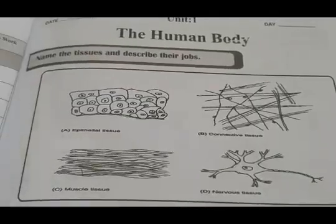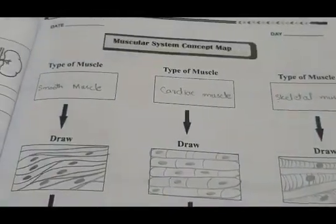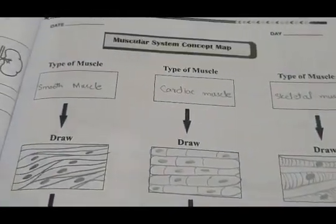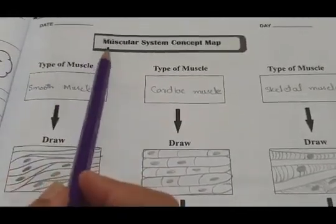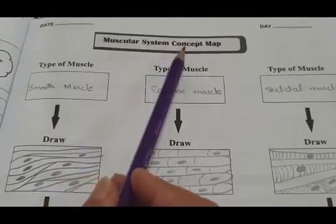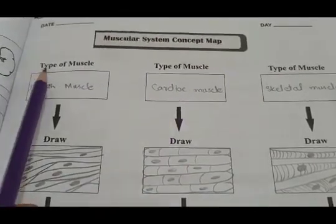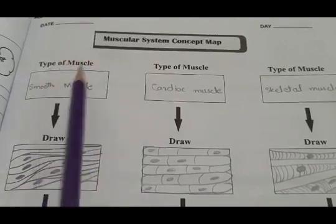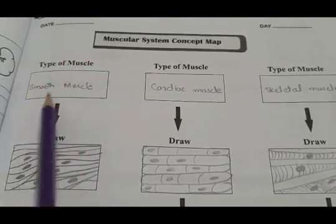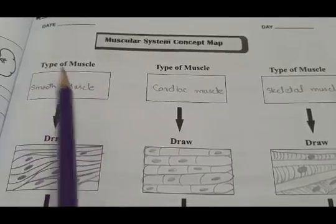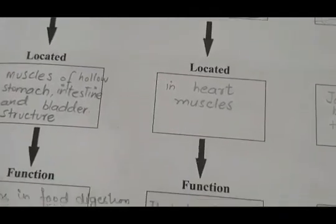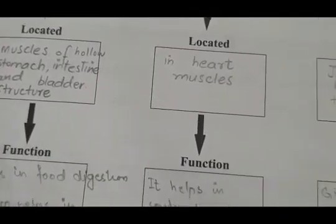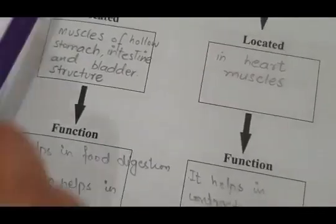Dear students, we have done page number one and two of our workbook. Now move towards page number three. Here they have given you a muscular system concept map. They are asking you for the type of muscle, the proper name of the muscle, then draw its diagram, where it is located, and what is the function of that particular muscle.